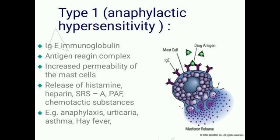In Type 1 anaphylactic hypersensitivity, there is an increase in IgE (immunoglobulin E). These immunoglobulins are present on mast cells and basophils. When an allergen enters, it binds with IgE, also known as reagin, forming an allergen-reagin complex. When this complex is formed, permeability of the mast cell increases and mast cells release histamine, heparin, and slow reacting substance of anaphylaxis.